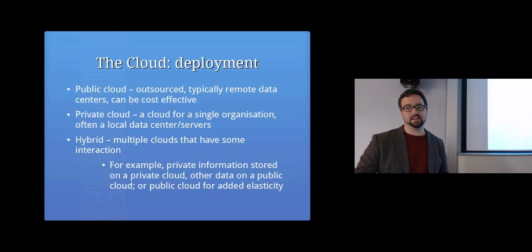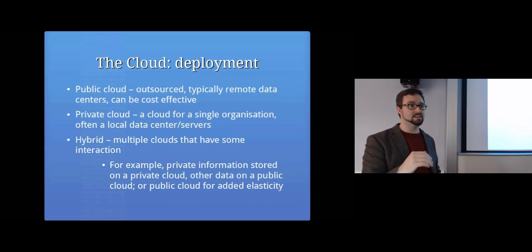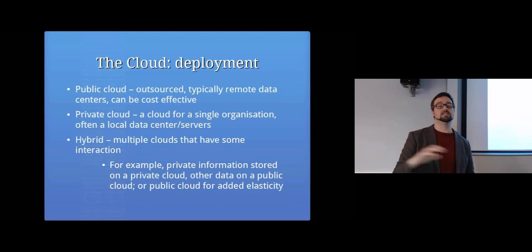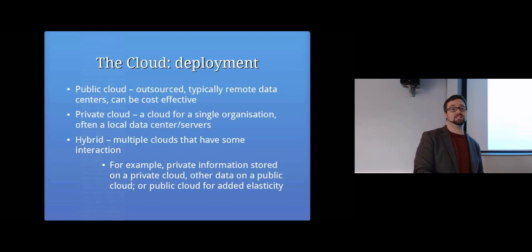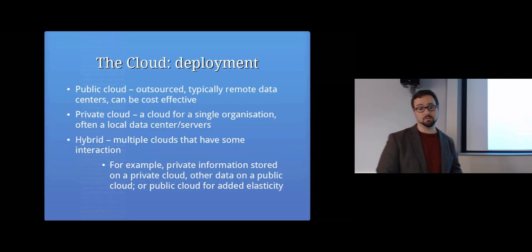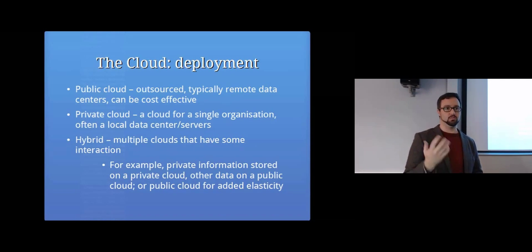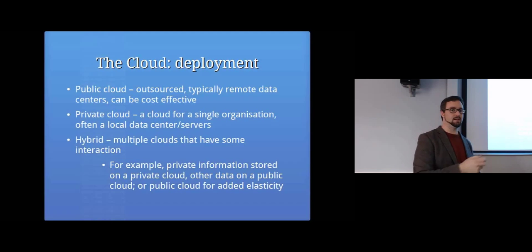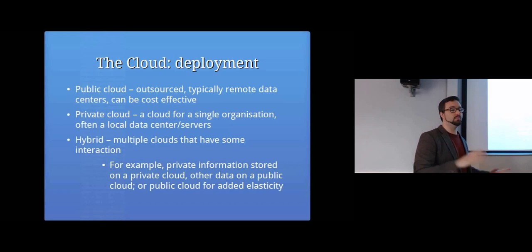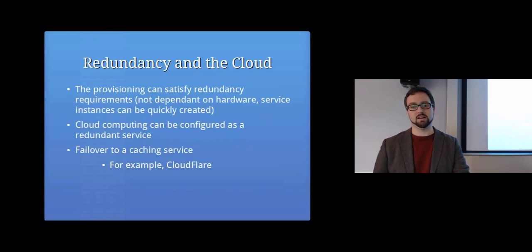Public cloud is where you outsource it and run on someone else's servers. Private cloud is where you use the same technologies but within your own organisation - you set up all the cloud infrastructure yourself just to run virtual machines on top of it. Hybrid is something in between - you might keep the most important business information on a private cloud on-site, while using a public cloud for things where privacy isn't as critical.